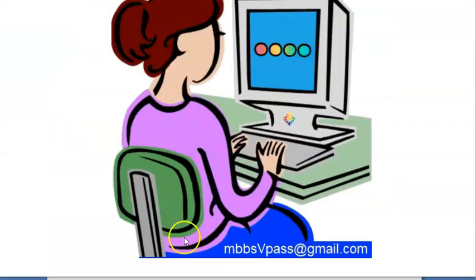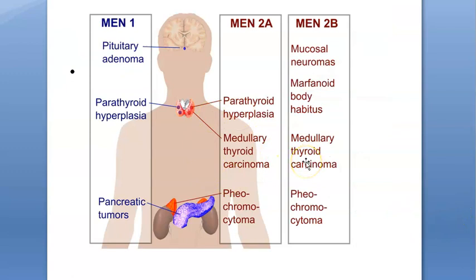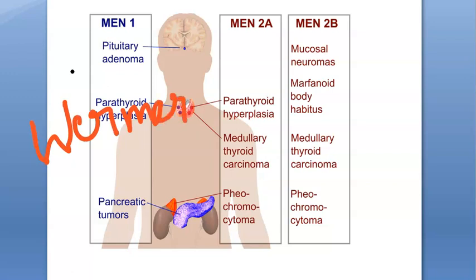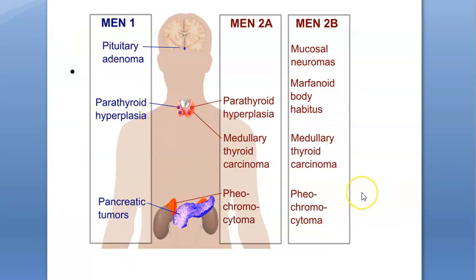So that's all about MEN. If somebody comes with one thing you have to check the others and check for the mutations and other genetic conditions. To recap the names: MEN 1 is called Wermer's syndrome, MEN 2A is Sipple's - S-I-P-P-L-E - and MEN 2B is nothing but three. MEN 4 is very similar to MEN 1 with pituitary adenoma, parathyroid hyperplasia, and pancreatic involvement.